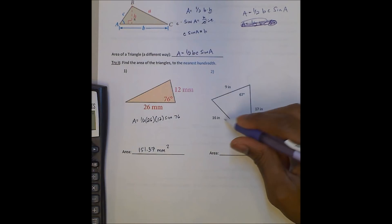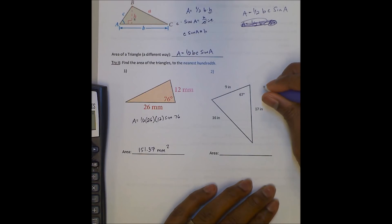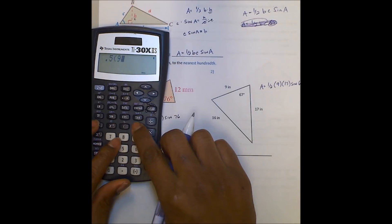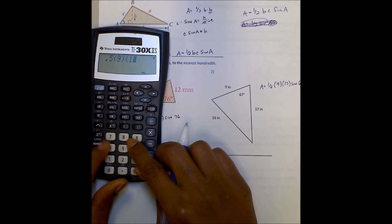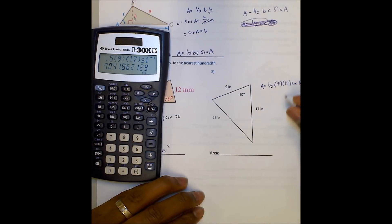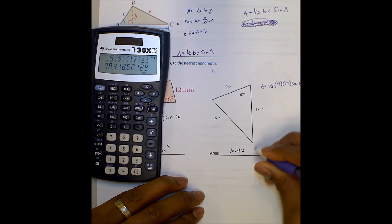Number two, notice we're given all three sides. We will use the sides that are including an angle. So 9 and 17, where 67 is the included angle, that's the sides that we'll use. And so our formula, in this case, will be 1 half, 9, times 17, sine 67. Again, we can put that all in our calculator. 1 half, 9, times 17, sine 67. And that gives us 70.4. So the area of this figure will be 70.42 inches squared.